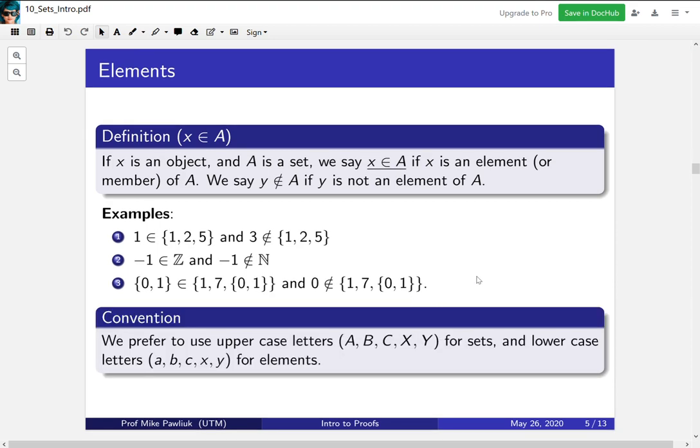Already, we see that there can be some confusion about where things live. So as a convention, we tend to use uppercase letters for sets. So capital A, B, C, X, or Y. And we tend to use lowercase letters for elements. So the capital letters are sets and the lower letters are for elements. This will help us read things at a glance and understand them.